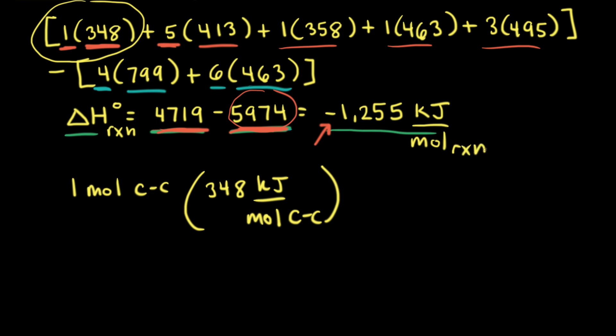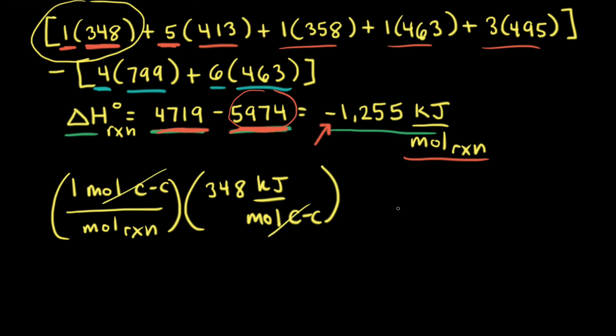Kilojoules per mole of reaction means how the reaction is written — so for the combustion of one mole of ethanol, 1,255 kilojoules of energy are released. To get kilojoules per mole of reaction, the balanced equation had a coefficient of one in front of ethanol, so you're breaking one mole of carbon-carbon single bonds per one mole of reaction. When you multiply through, the moles of carbon-carbon single bonds cancels, giving you 348 kilojoules per mole of reaction.